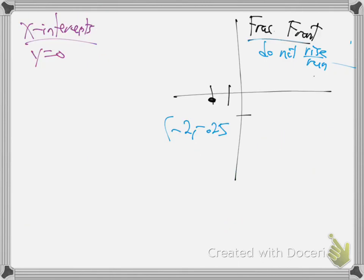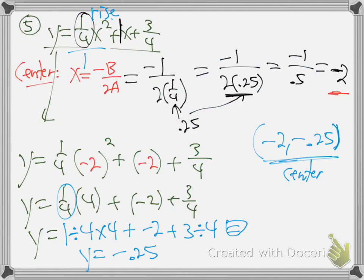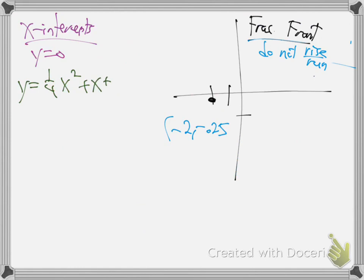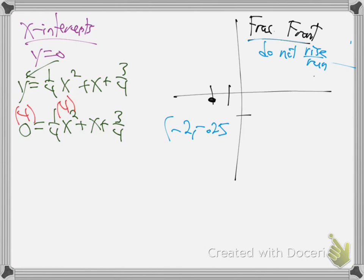So the y-intercept: we make x zero. When you make x zero, you put in zero, put in zero, they drop out. Y is three quarters. So that's over zero, up three quarters - that's the y-intercept. We're done with this problem - that's the worst one, with all those fractions and things. Make sure you can do your calculator with those fractions. Go to the tutoring center if you have trouble - they will help you.